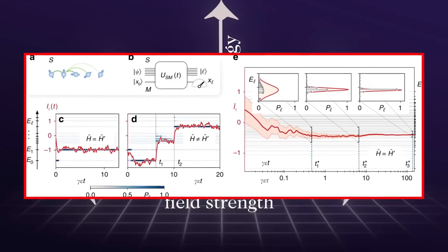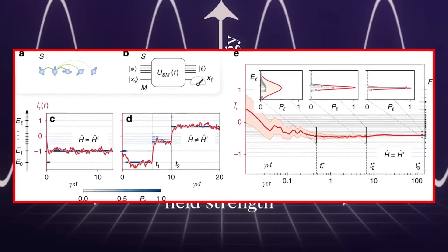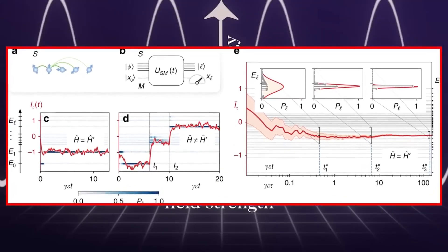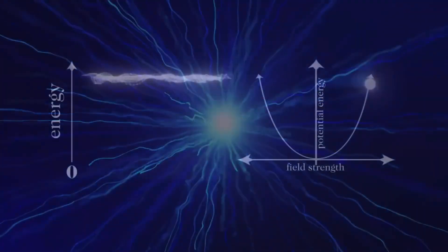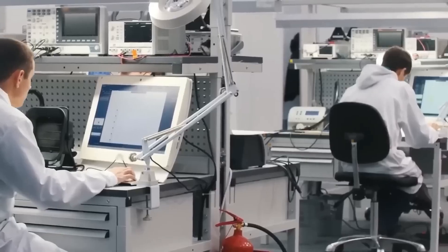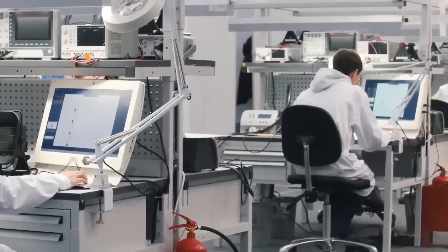One surprising link comes from quantum fluctuations—tiny, unpredictable energy shifts that occur even in empty space. Some researchers believe that axions, if they exist, may leave behind a detectable signature in these fluctuations.